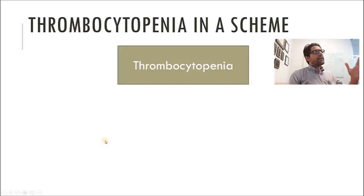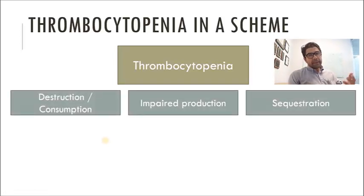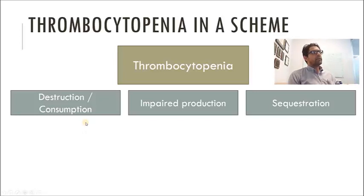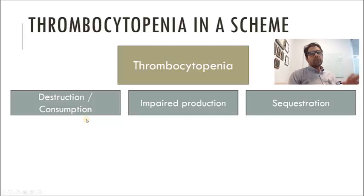A scheme is just a simplified approach to a common problem. Here's my scheme for thrombocytopenia — something I probably borrowed from somebody else. Thrombocytopenia usually results from one of three mechanisms: destruction/consumption, impaired production, or sequestration. One colleague adds dilution, and that's fine, but generally these three are the major causes.